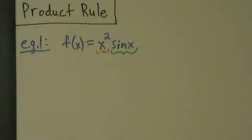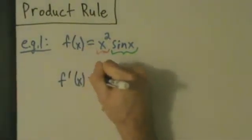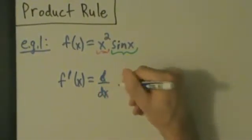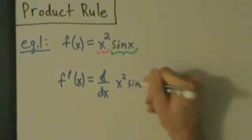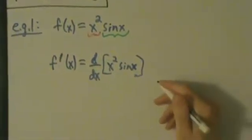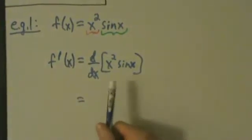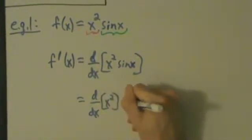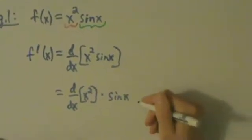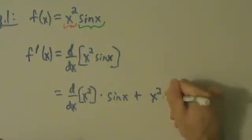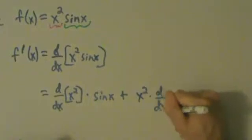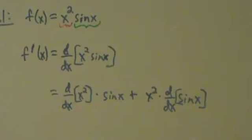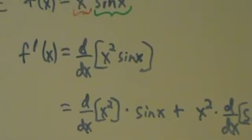We know from the product rule that the derivative is going to be d/dx of x squared sine of x. And the product rule tells us that that's equal to the derivative of the first thing — so d/dx of x squared — times just the second thing, and then plus just the first thing times the derivative of the second thing. So that's what the product rule tells us.